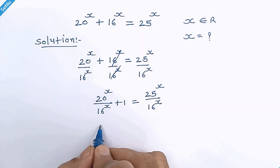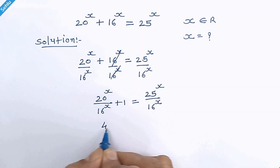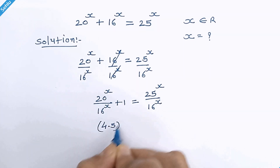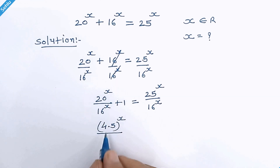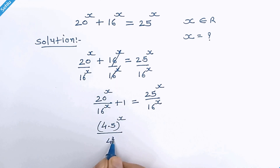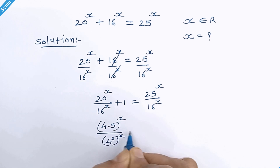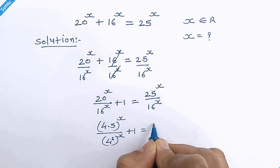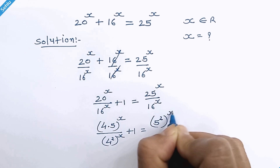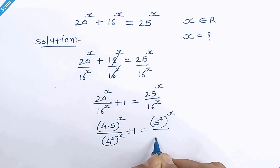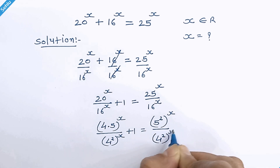Now, 20 can be written as 4 times 5, whole raised to x, over 16, which is 4 squared. So we can write: 4 squared, whole raised to x, plus 1 is equal to 5 squared, whole raised to x, over 4 squared, whole raised to x.